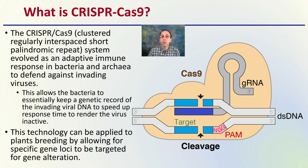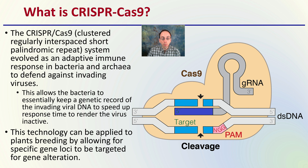It's actually an evolutionary or genetic improvement for bacteria to be able to recognize foreign viral DNA and counteract it at a quicker rate. This technology can be applied to plant breeding by allowing specific gene loci to be targeted for gene alteration, responsible for specifically targeting a sequence and adding in genes we may deem desirable.